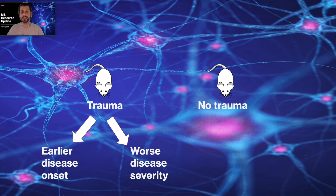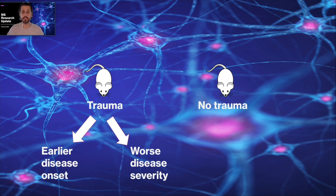Looking at the mice that had undergone trauma versus those that didn't, they examined whether there were any differences in disease outcomes. The mice that did experience this early life trauma had both earlier disease onset — indicating that the trauma may have increased their susceptibility to developing the disease — and also worse disease severity. So after the disease developed, the mice that had experienced early life trauma had a worse progression, indicating that it impacted both susceptibility and severity.